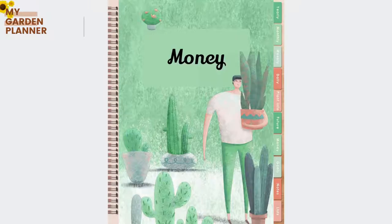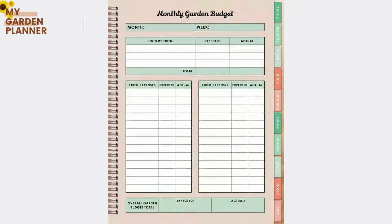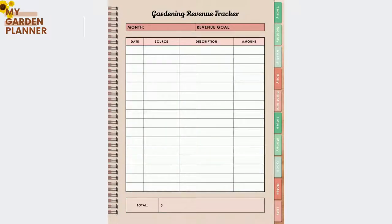If you have a garden or a small gardening business, you want to have a monthly garden budget to record all your fixed finances and expenses, an overall garden budget tracker, and also a garden revenue tracker where you record the source, description, amount of revenue, and revenue goal.